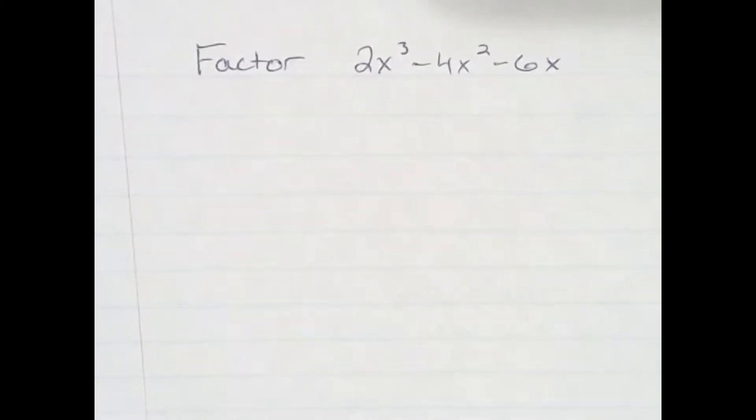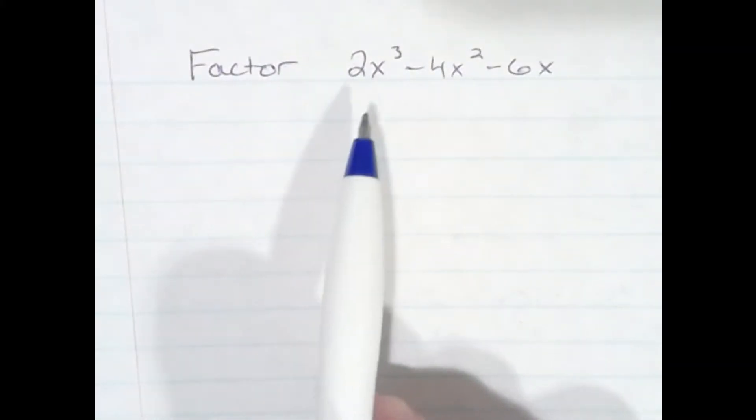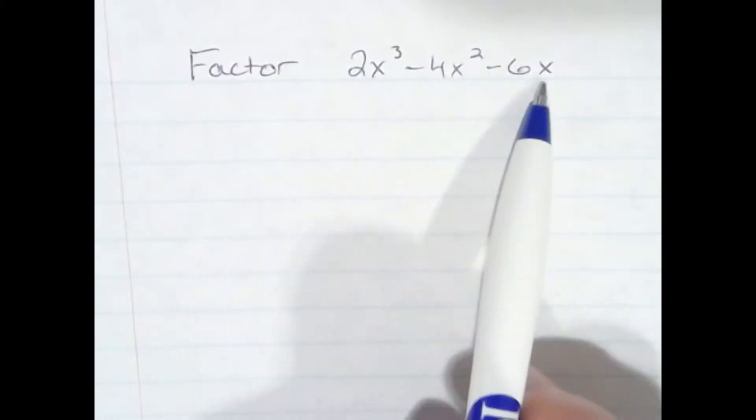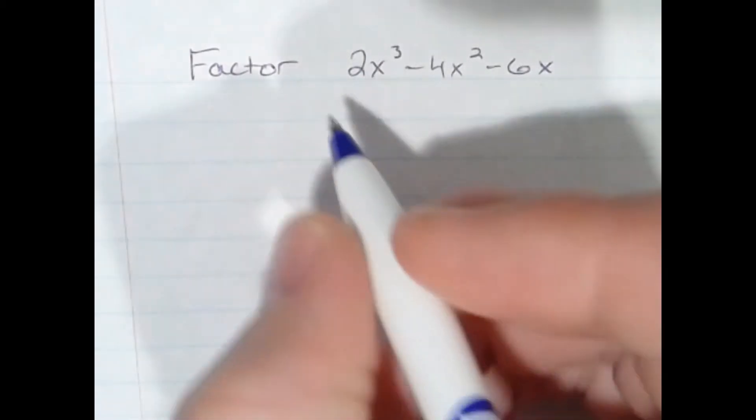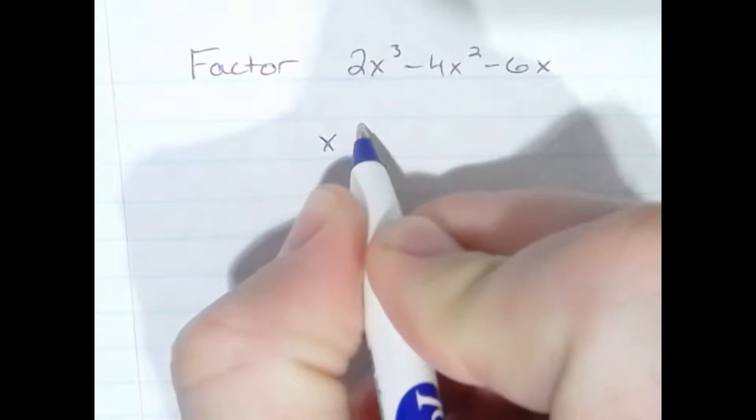Alright, so in this problem we have the trinomial 2x to the third minus 4x squared minus 6x. First thing we're going to look for is there's something in common with all three terms, and there is an x. So I'm going to take that out first.